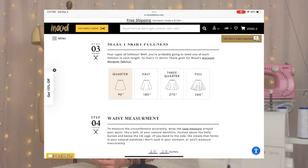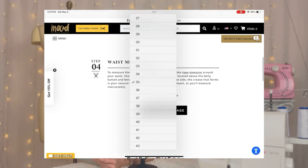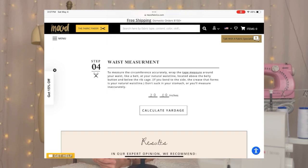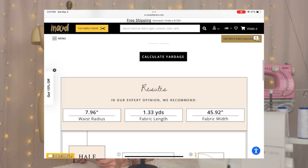And the skirt fullness - there are four types of fullness: quarter, half, three-quarters, and full. The ones I've used in the past are half and full. Then you need to input your waist measurement. I'm going to input 27 because that's my waist measurement, and then calculate yardage.